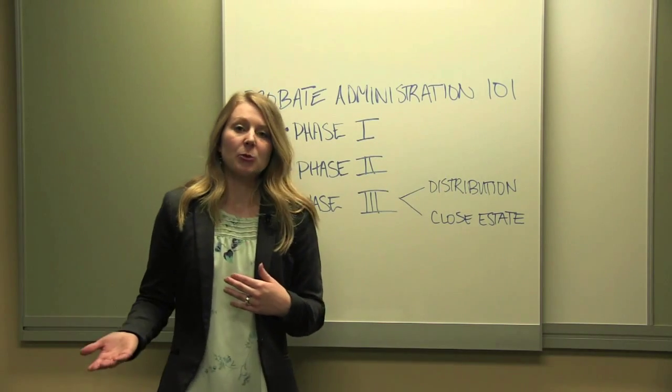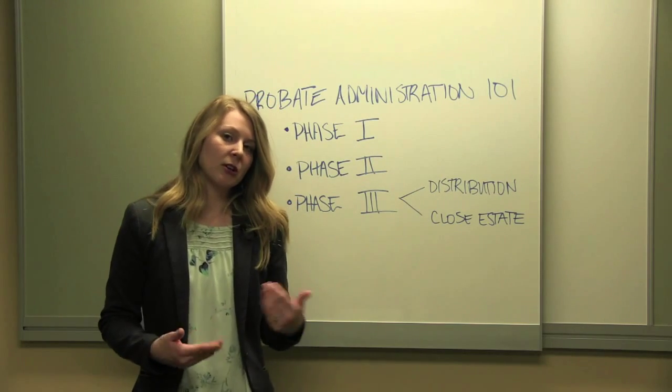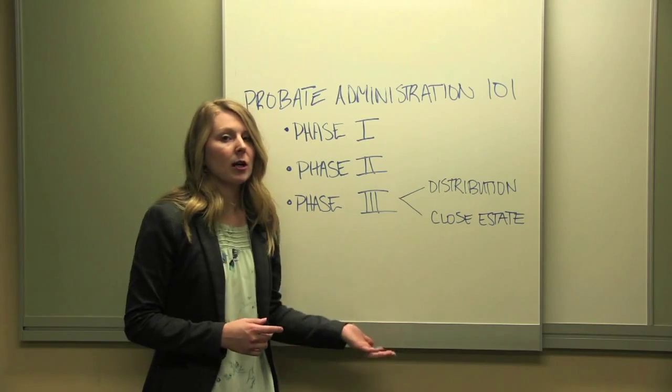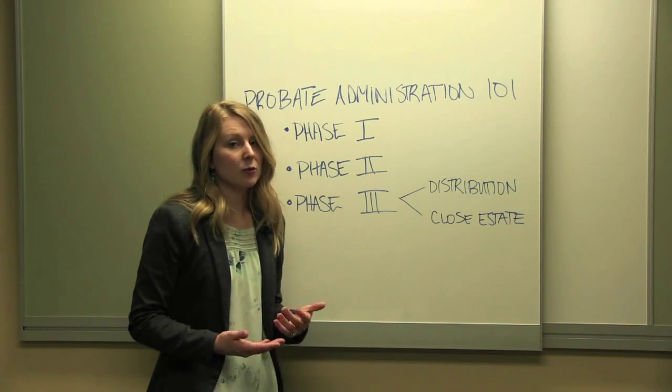The executor has to be aware that the probate court doesn't actually let them off the hook until one year after those closing documents are accepted and filed with the probate court.